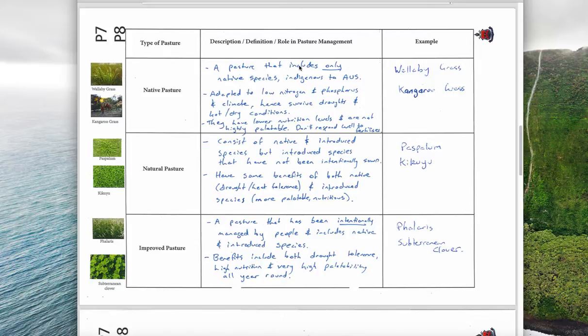A native pasture obviously has only native species indigenous to Australia. It's adapted to low nitrogen, low phosphorus soil and the climate generally hot and dry. Native species generally survive very well in hot and dry conditions.